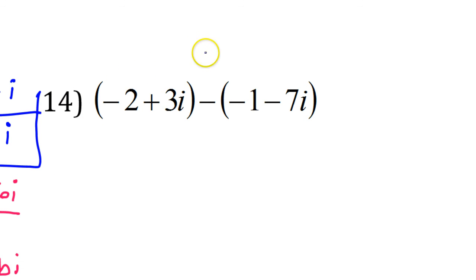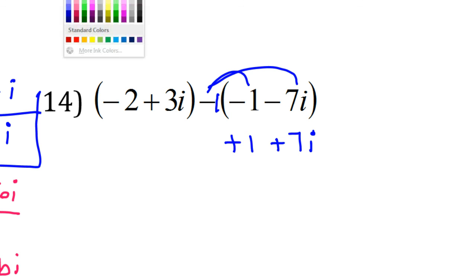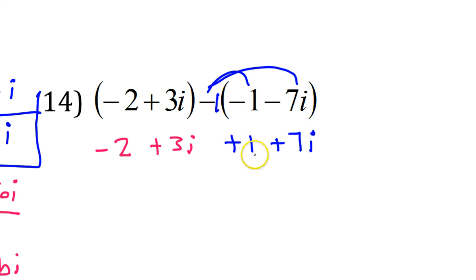Number 14, some students will be tempted to distribute all the way across. Like you're going to FOIL it. You're going to double distribute. But no, no, no, no. This is not a multiplication problem. This is a subtraction problem. So the only thing you're going to distribute is this negative 1. And I'm only going to distribute right here. Now, when you do this, I encourage you to recopy it without parentheses. So negative 1 times negative 1 is a positive 1. Negative 1 times negative 7 is a positive 7i. So that's how that looks after you distribute the negative 1. Meanwhile, this part over here, just erase the parentheses. Because there's nothing in front. So this is just negative 2 plus 3i. After that, you can just combine like terms. So I've got negative 2 plus 1. That's negative 1. And I've got 3i and 7i. That's 10i. So negative 1 plus 10i.